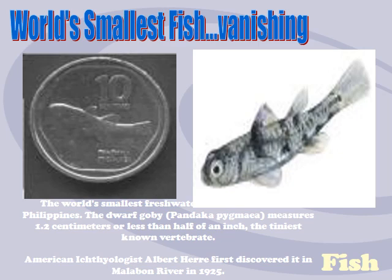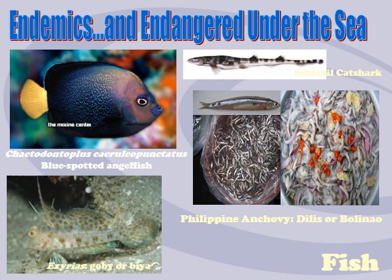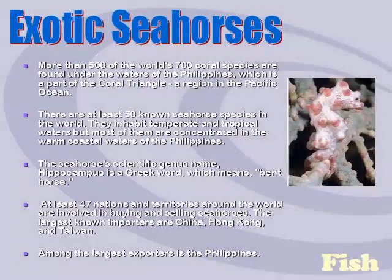We still have the smallest commercial fish — the Sinarapan, Mistichthys luzonensis — it would take a thousand to fill a tablespoon. Other endemic fish include the blue-spotted angelfish, the endemic and endangered anchovy or dilis. The Philippines also has exotic seahorses and is one of the largest exporters of seahorses to China, Hong Kong, and Taiwan.